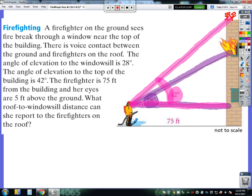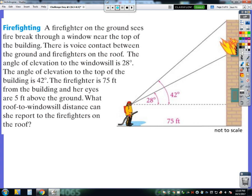The firefighter is 75 feet away from the building and her eyes are 5 feet above the ground. What roof to windowsill distance can she report to the firefighters on the roof? So let's clear out all this stuff here. The roof to windowsill distance, well that would be this distance right here. We need to figure out that distance.